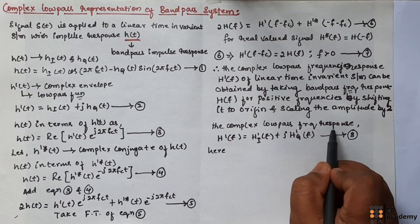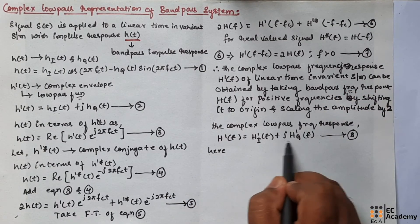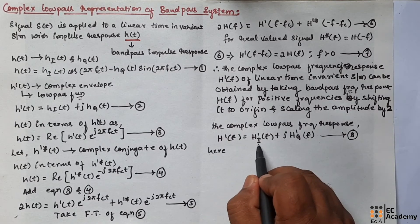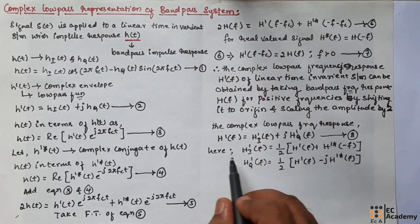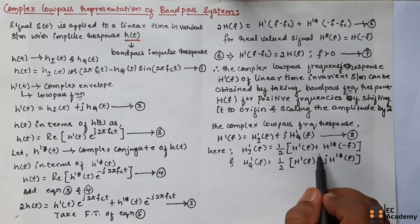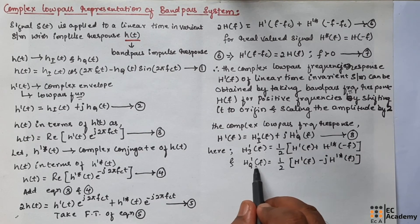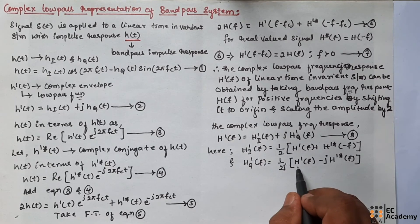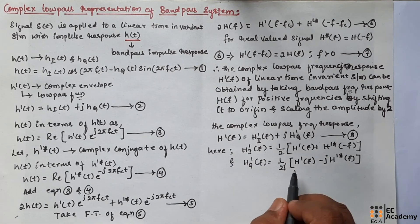Therefore, the complex low pass frequency response H̃(f) can be expressed in terms of quadrature components as: H̃(f) = Hĩ(f) + j H̃q(f). Here, Hĩ(f) = (1/2)[H̃(f) + H̃*(−f)] and H̃q(f) = (1/2j)[H̃(f) − H̃*(f)].